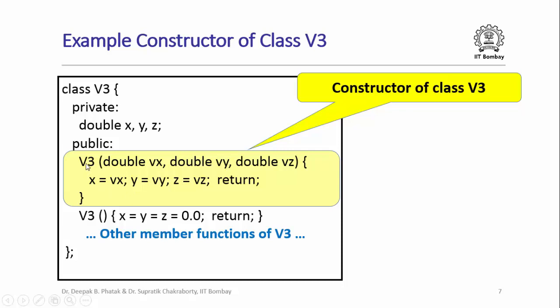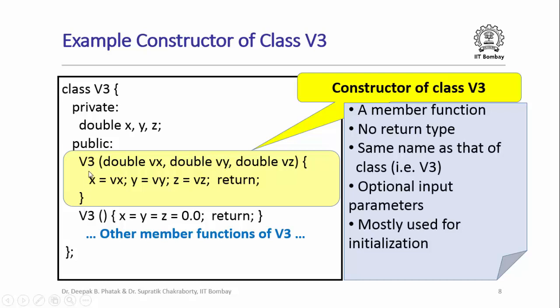Note a few things about this constructor function. It looks just like any other member function of class V3, except that V3 here is not its return type — it is the name of the constructor function. The name of the constructor function is the same as the name of the class, and by C++ convention the constructor function does not have a return type. It takes optional input parameters and is mostly used for initialization. This is one constructor function of class V3.